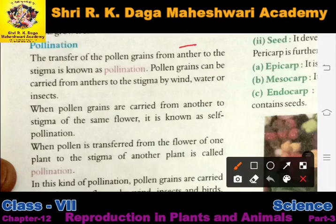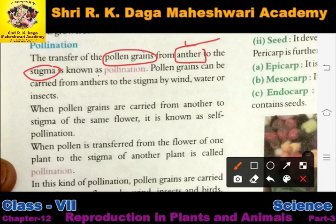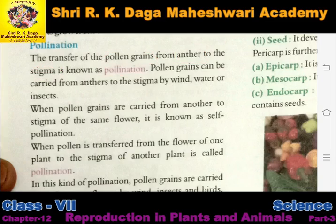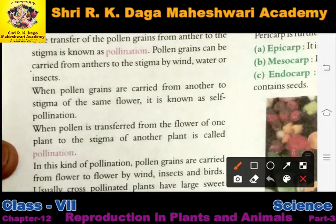Simply put, when pollen grains travel from the anther to the stigma, that process is called pollination. Pollen grains can be carried from anthers to the stigma by wind, water, or insects — ye pollen grains kin kin medium se ja sakte hain.